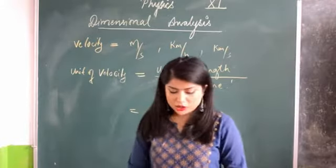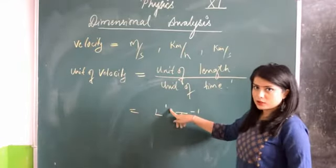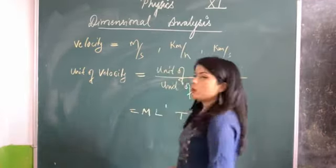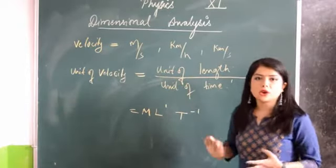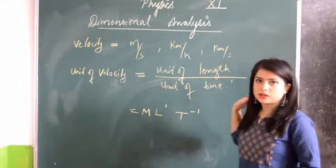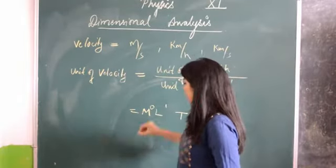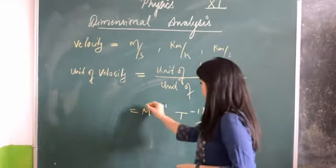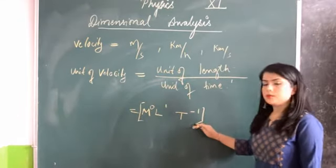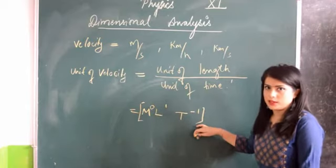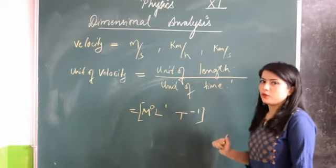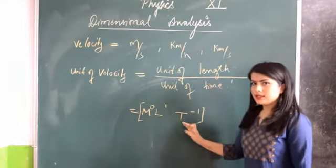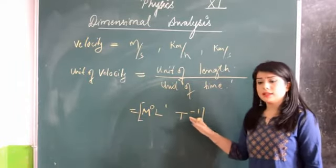The dimension of velocity is L to the power 1, T to the power minus 1. Mass is not at all mentioned for velocity, so we write M to the power 0, meaning the mass factor is not present. We cover this in this kind of brackets, and this becomes the dimensional formula for velocity. We write it in the form M, L, T — where M is for mass, L is for length, and T is for time. This is how we write a dimensional formula.